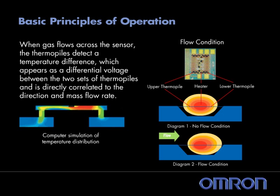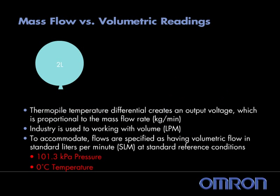As air flows across the MEMS Flow Sensor Chip, a temperature differential is created between two sets of thermopiles. This differential is signaled by an output voltage proportional to the mass flow rate of the gas flowing over the chip.